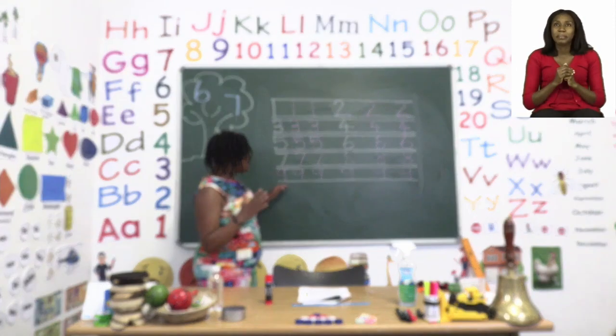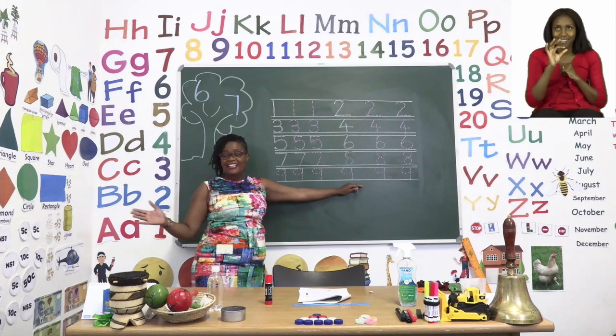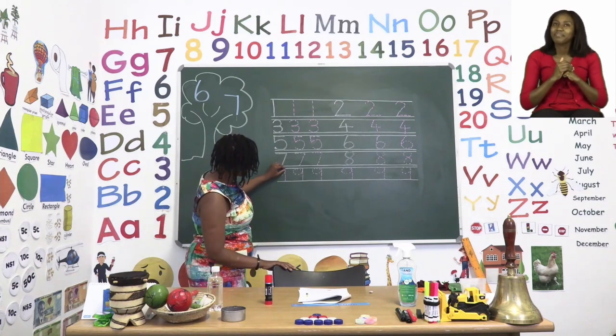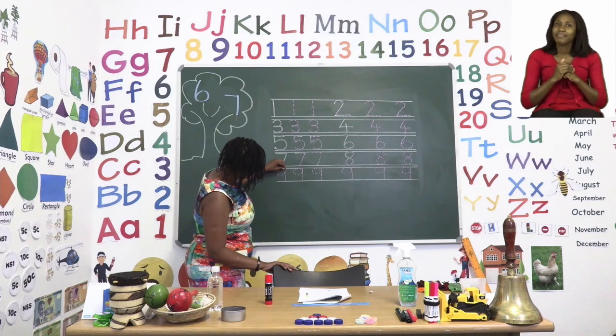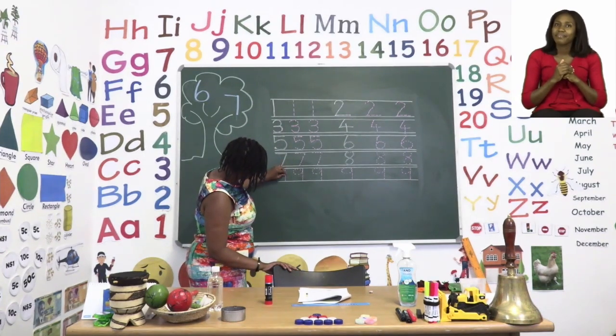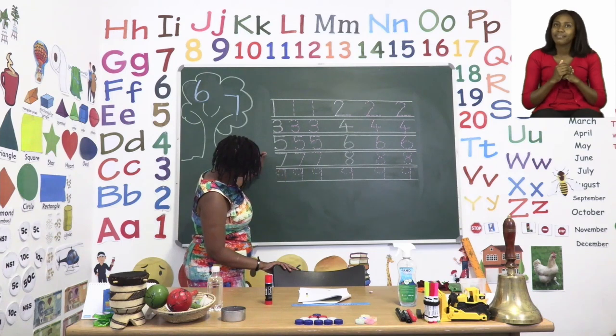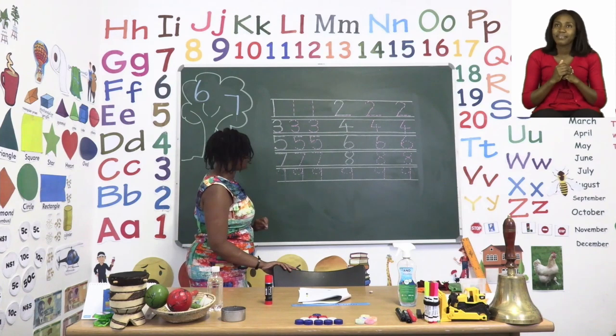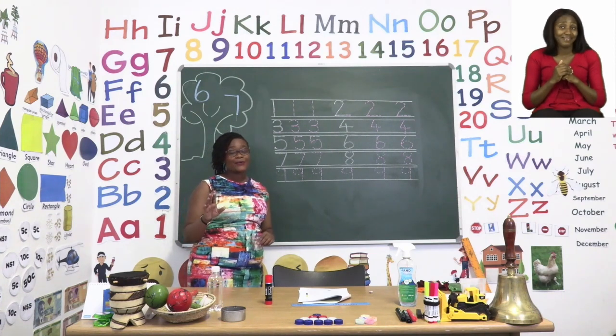Then the last number is nine. And nine has its line all to itself. We're going to start at the top and we're going to say, down. We lift up our pencil and round. There we go. And these are our numbers.